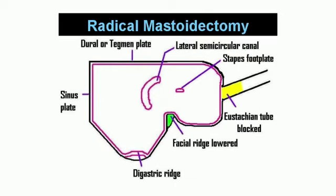Radical mastoidectomy. Here the surgeon removes the eardrum and middle ear structures. A skin graft is placed in the middle ear after the procedure.